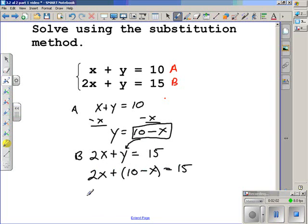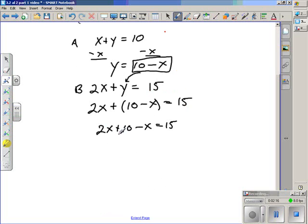Notice the equation is in one variable, and now we're going to be able to solve that equation for x. Simplifying this equation gives us 2x + 10 - x = 15. We continue to simplify: 2x - x gives us x + 10 = 15. We will subtract 10 from both sides to isolate the variable x to find that x = 5.